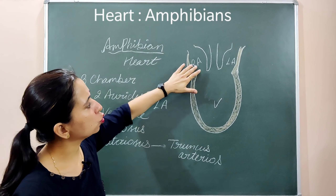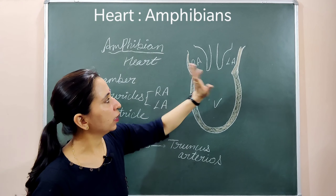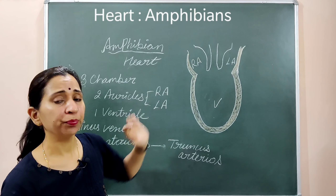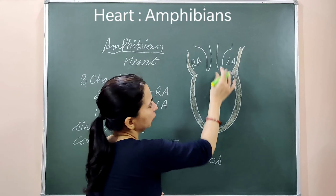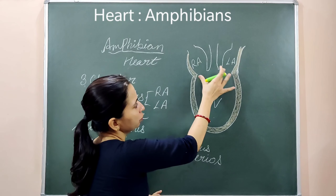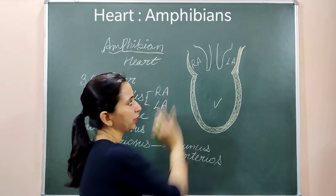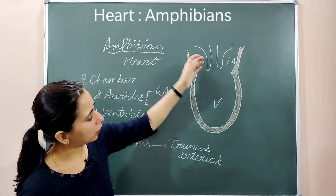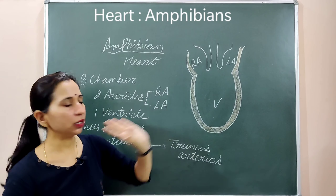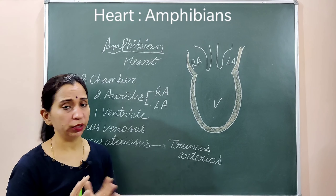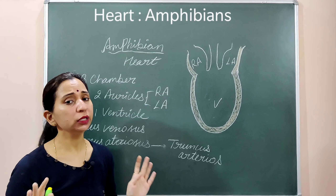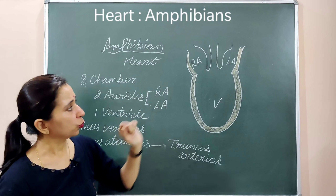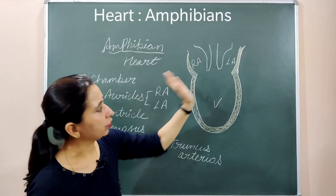The left atrium and the right atrium are divided into two different chambers through a septum. The ventricle, however, is a single chamber structure — there is no partition in the ventricle of the amphibian heart.